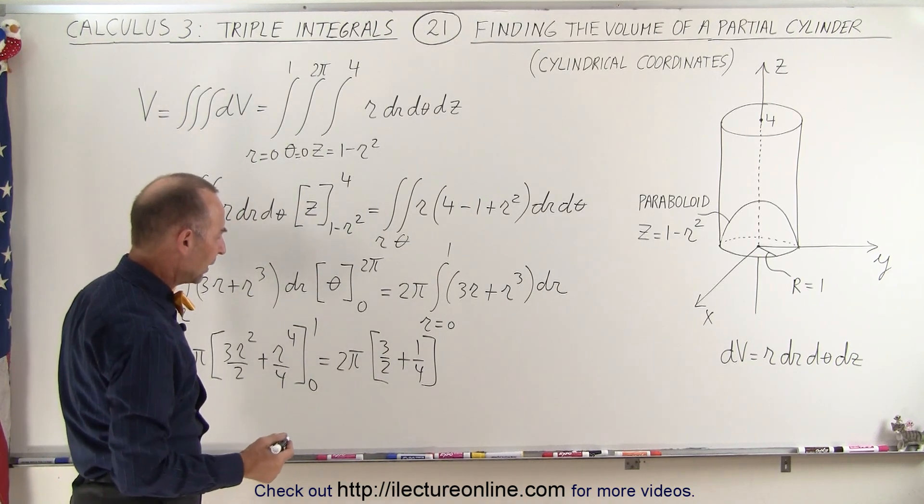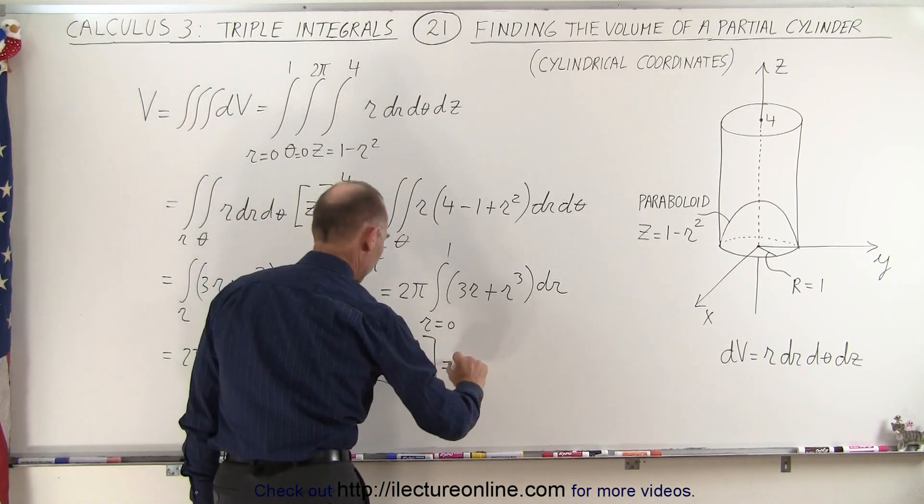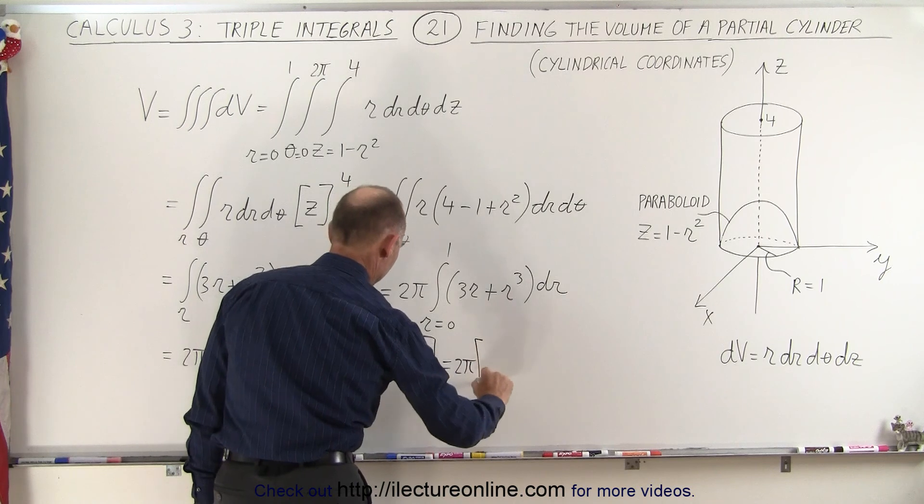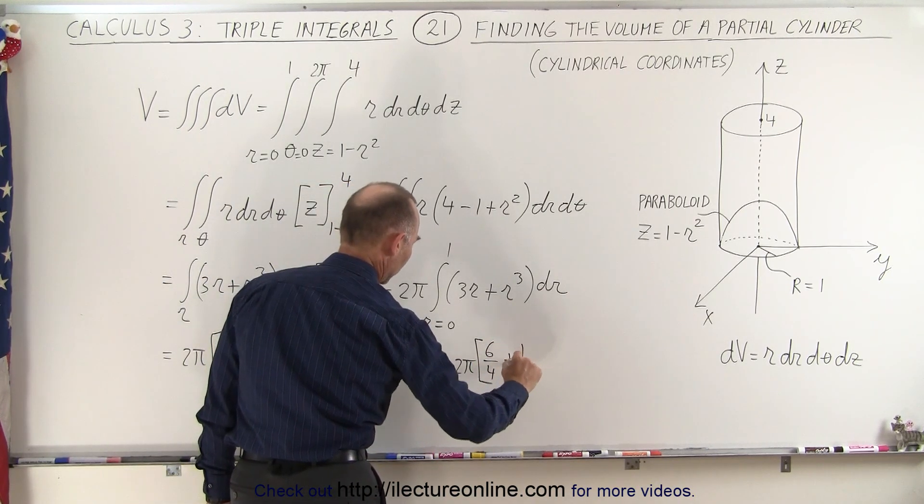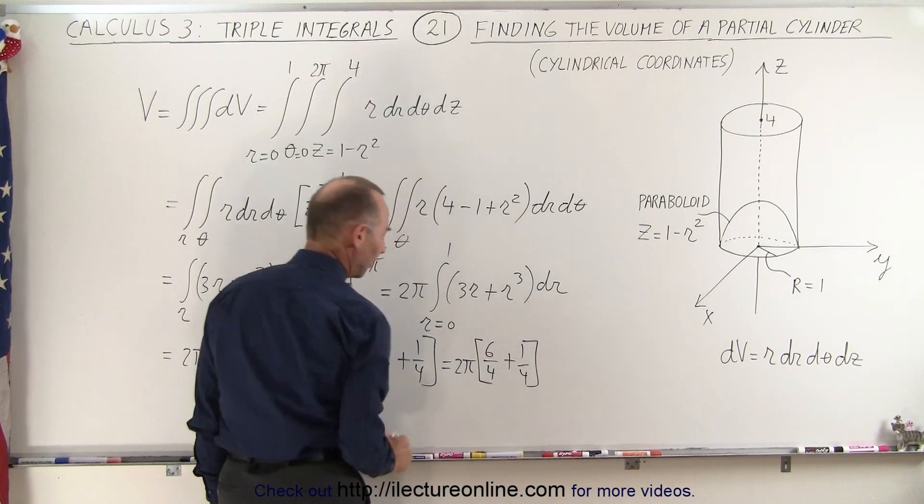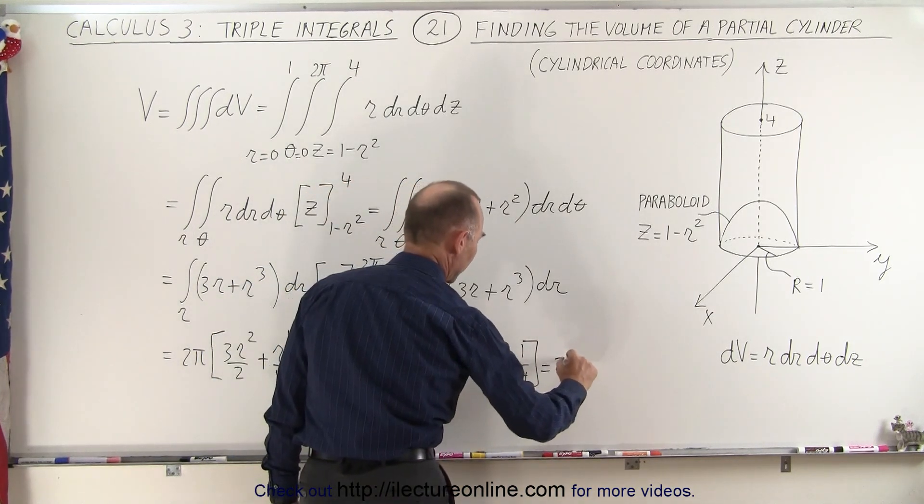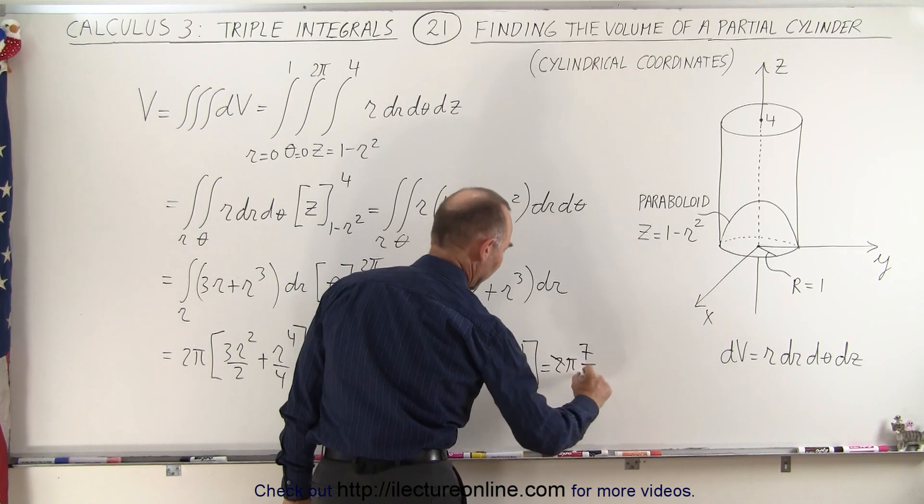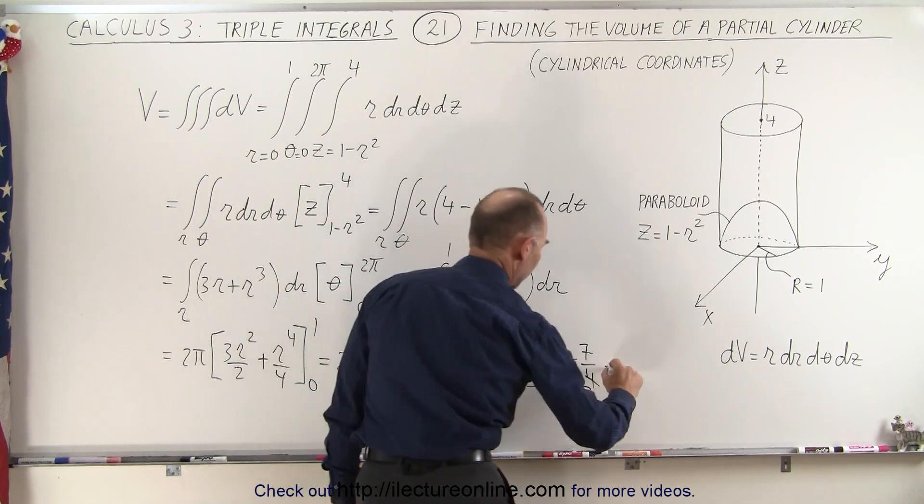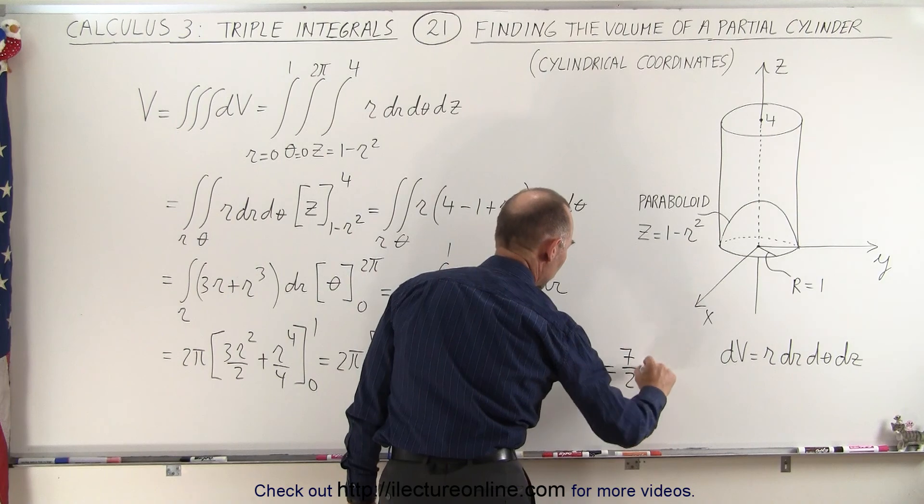Simplifying that, the common denominator would be 4, so this is equal to 2π times 7 over 4. So this is equal to 2π times 7 over 4, the 2 and the 4 cancel out, which becomes 7 over 2π.